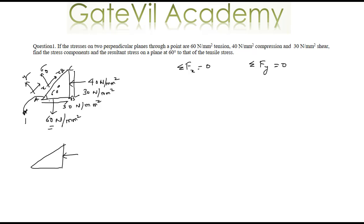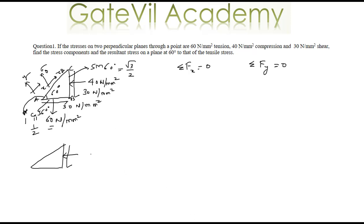If the area of AC is 1, the area of AB will be cos 60 which equals one half, and the area of BC will be sin 60 which is √3/2. So the force due to the 40 N/mm² stress will be 40 × √3/2, which simplifies to 20√3. The force due to the shear stress will be 30 × √3/2, which is 15√3. We also get 30/2 = 15 and 60/2 = 30.